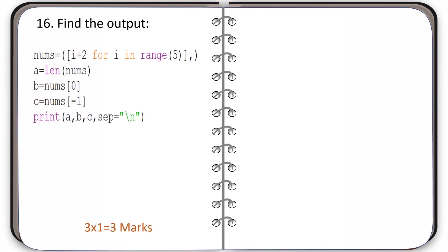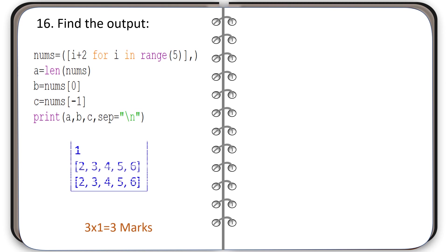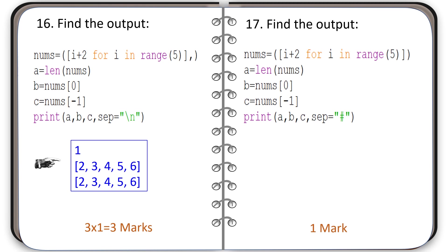Question number 16: see the code and find the output. The correct output is shown. Question number 17: find the output of the given code. The correct output is shown.